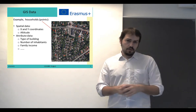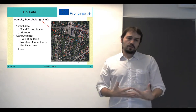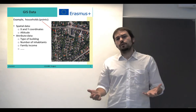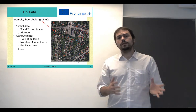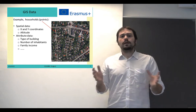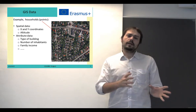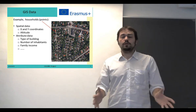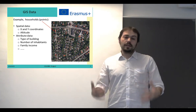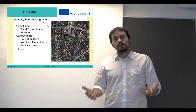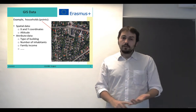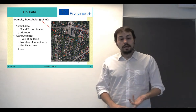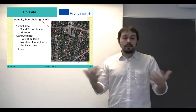Here we have an example of how we represent households in a geographic information system. In this case, we use points. Those points have spatial information, which could be Cartesian coordinates representing their x and y coordinates. We can also go to a third dimension and talk about the altitude where those houses are located. In addition, we have attribute data that could describe the type of building, the number of people living in it, the income of the family, and so on.